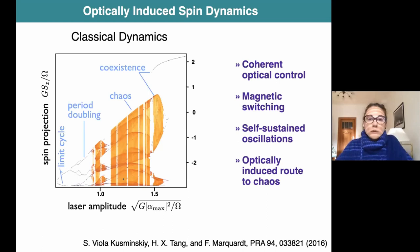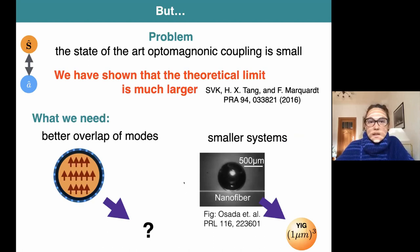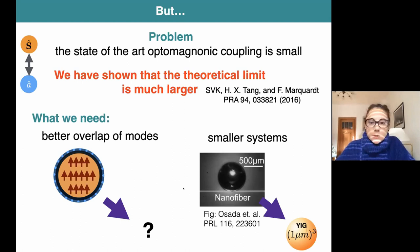Going beyond this fast cavity limit, there is a very rich nonlinear dynamics of the system, even including chaos. One can also obtain limit cycle dynamics, which is interesting from the point of view of magnon lasing. But there is an issue: the experimental state-of-the-art coupling is small. However, if one takes the theoretical expression, the theoretical limit for this coupling is much larger than what is observed. The issue in experimental setups is the overlap of the modes, which is really suboptimal. This diminishes the coupling, and the systems are quite large - one really wants to go to the micron scale and reach the diffraction limit to confine the light.